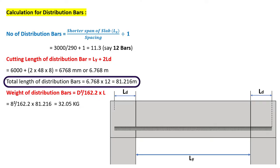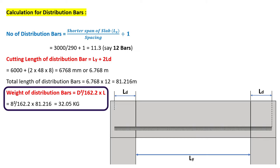Total length of distribution bars equals cutting length multiplied by number of bars: 6.768 × 12 = 81.216 meters. Weight of distribution bars is calculated using D² / 162.2 × L, where D is 8 mm and L is 81.216 meters. The total weight of distribution bars is 32.05 kg.